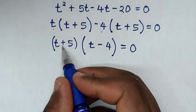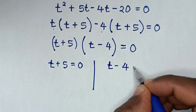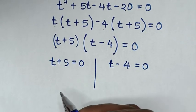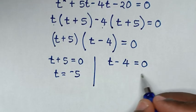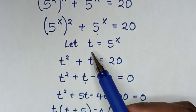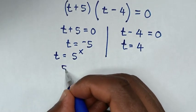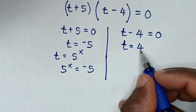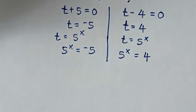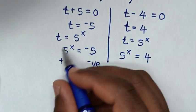From here we have two solutions: the first solution is t plus 5 is equal to 0, and the second solution is t minus 4 is equal to 0. To find the value of t, we take 5 to the right side — so t is equal to negative 5. And here, taking negative 4 to the right side gives t is equal to 4. Now, 5 power of x equals negative 5 must be rejected because 5 to the power of any number is a positive value, and negative 5 is negative — positive cannot equal negative. Therefore this solution is rejected.